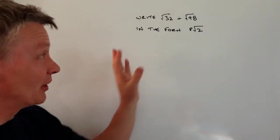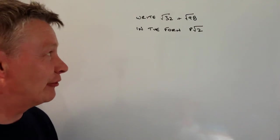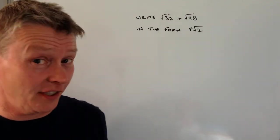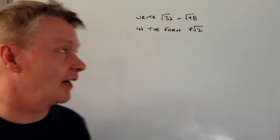Hi, in this particular video we're going to be looking at working with surds. This is probably around level 5 or level 6 of GCSE in the new curriculum, and we're asked to write root 32 plus root 98 in the form P root 2.